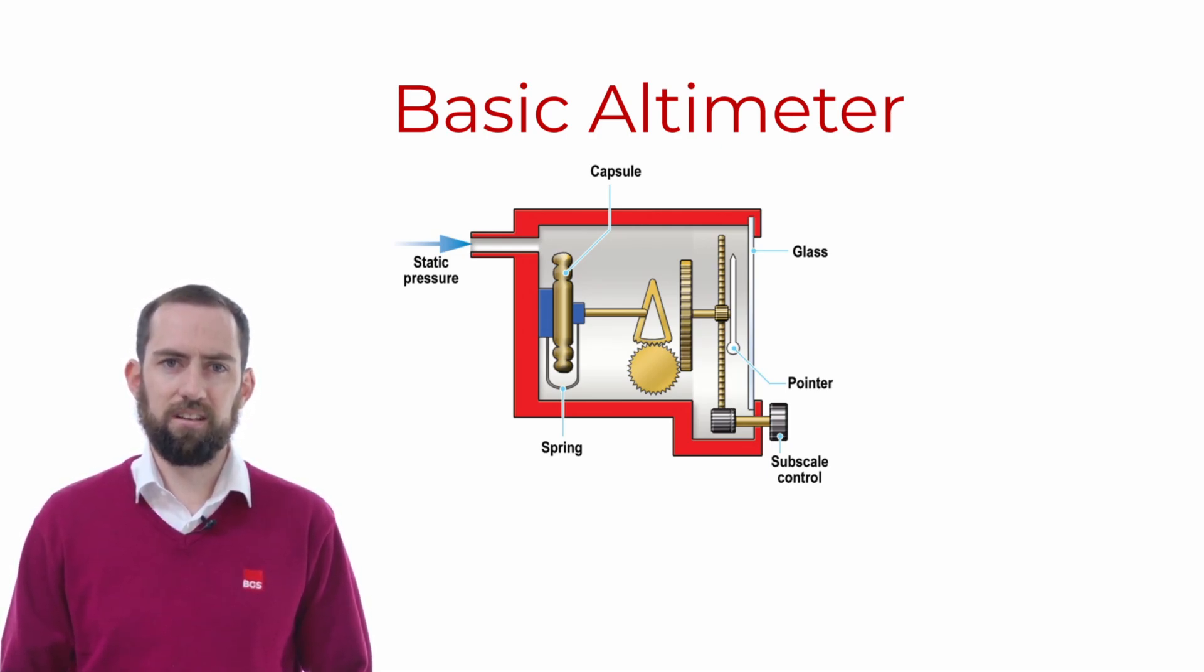A standard altimeter contains an aneroid capsule. This capsule will expand and contract based on the static pressure experienced inside the casing of the altimeter. When the aircraft is at low elevation, the weight of the atmosphere should be quite heavy and should put pressure on the walls of the capsule, forcing it to contract.